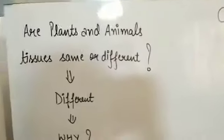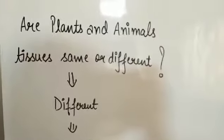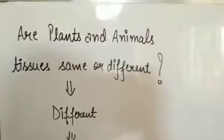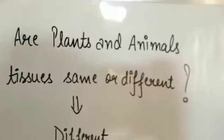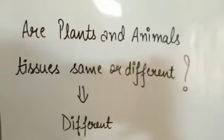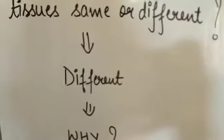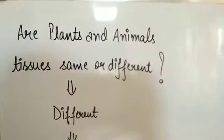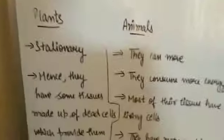After seeing the classification, the question arises: are plant and animal tissues the same or are they different? Do plant and animal tissues have any common similarities? The answer is that they are different — plant and animal tissues are totally different. Why are they different? The reason lies in the various characteristics of plants and animals.